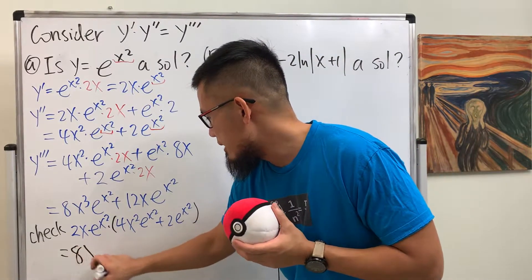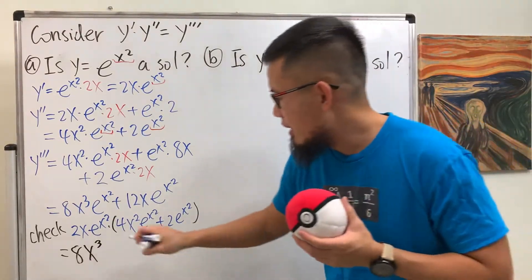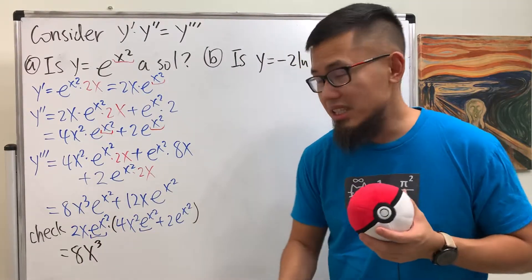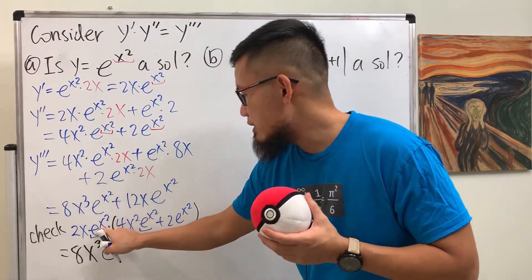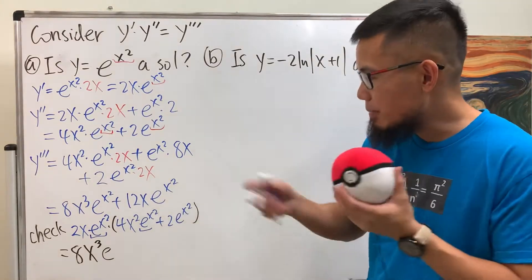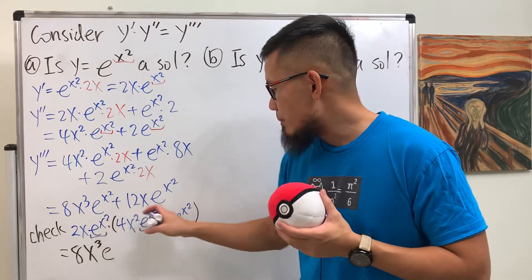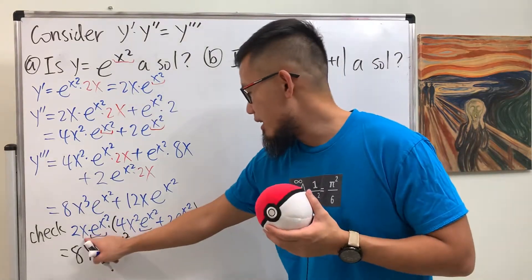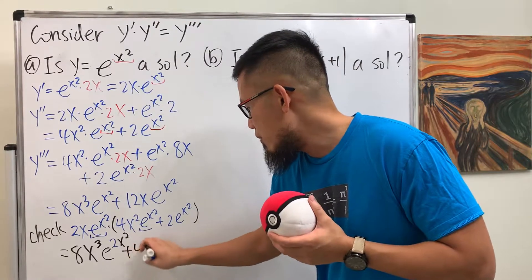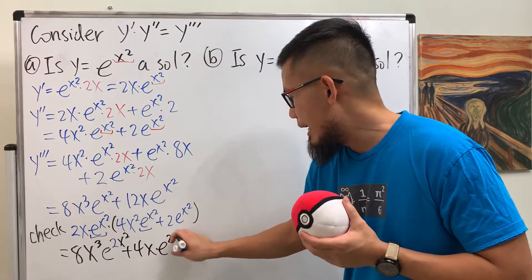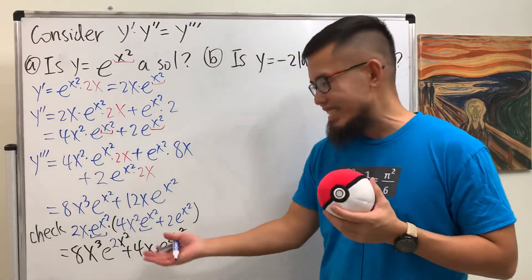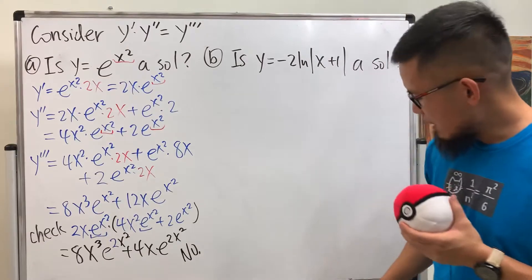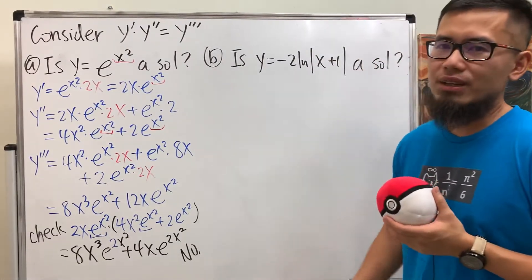2x times 4x squared gives 8x cubed. For the exponential part, same base e so we add the exponents: x squared plus x squared gives 2x squared, so we get e to the 2x squared. Then 2x times 2 gives 4x, also with e to the 2x squared. This result is not the same as y triple prime, so e to the x squared is not a solution to this differential equation.